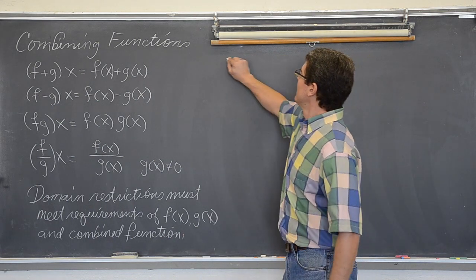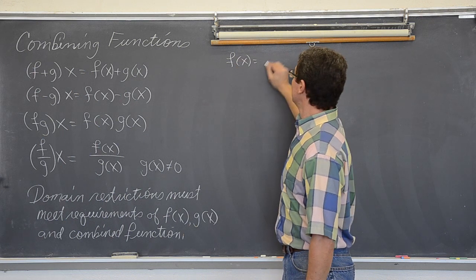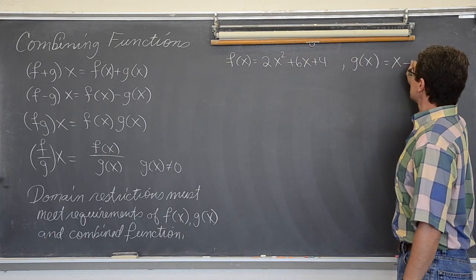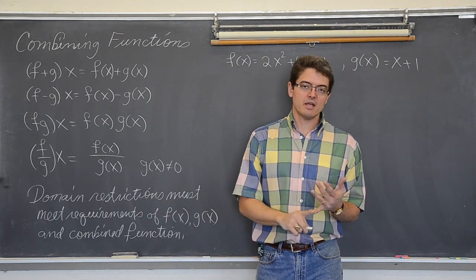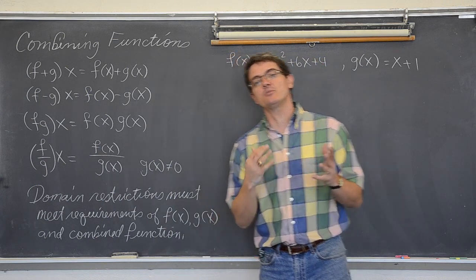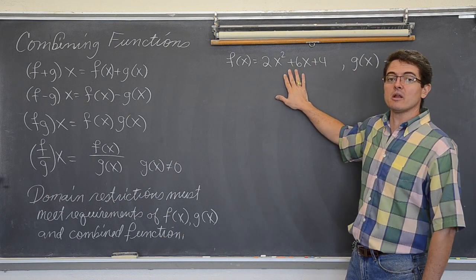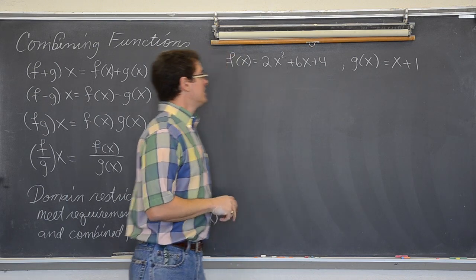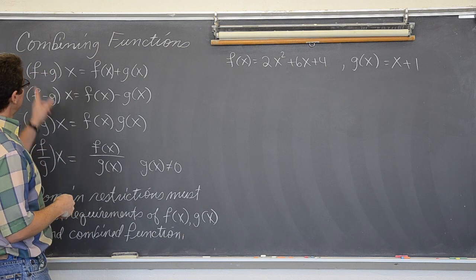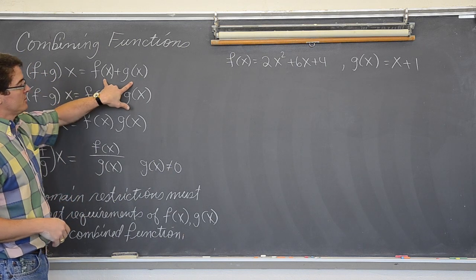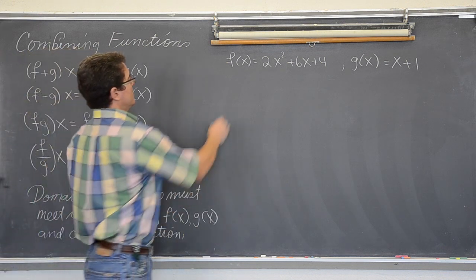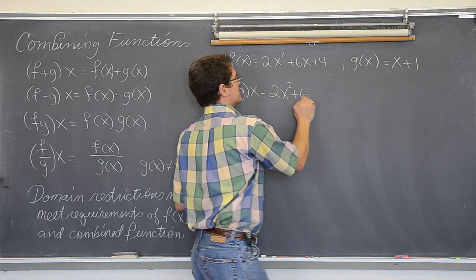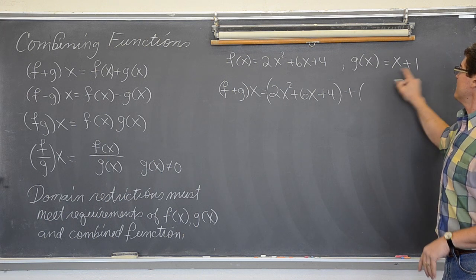Let's start off with a couple of functions. f(x) is equal to 2x squared plus 6x plus 4 and g(x) is going to be x plus 1. When you talk about domain you want to make sure you look at the domain of the two parts and the final answer — all of those have to meet the requirements. This is a regular polynomial with no division, no square root, same over here. So both of these have all real numbers for their domain, negative infinity to positive infinity. Let's look at what addition looks like. f plus g of x — you literally just take the functions and add them together. So f plus g of x equals 2x squared plus 6x plus 4 plus x plus 1.